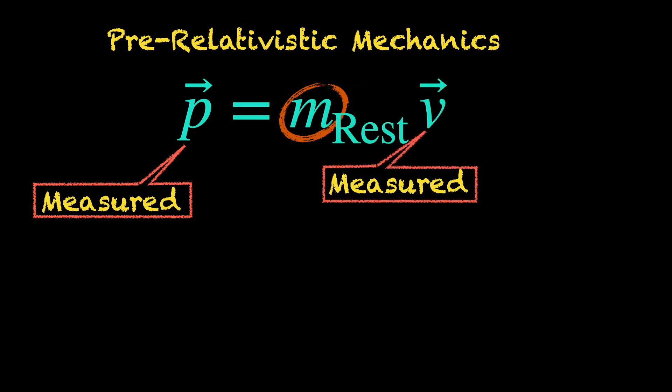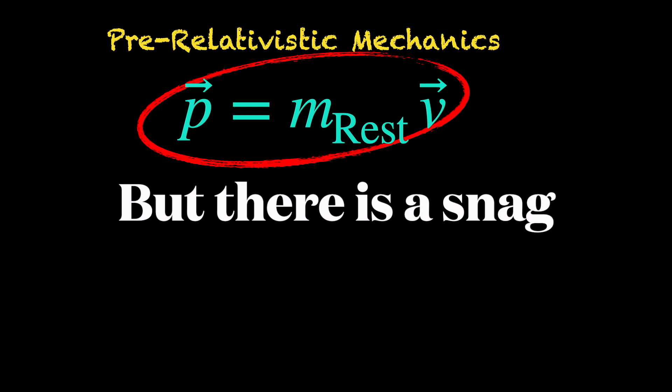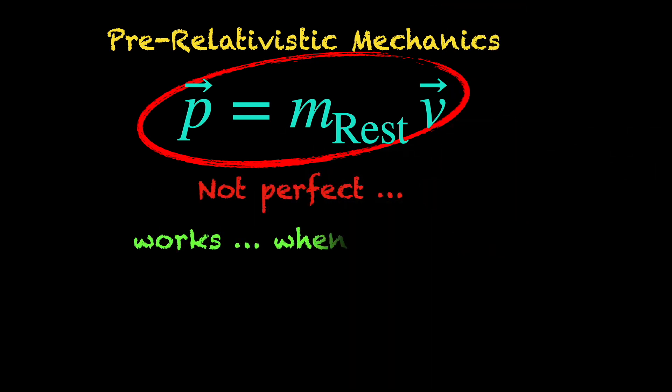Notice that the observer does not actually measure, rather he calculates the mass using a formula. But the issue is this formula is not perfect. It works, but only when the object is moving with small velocities,